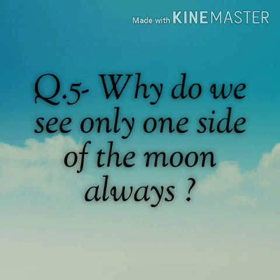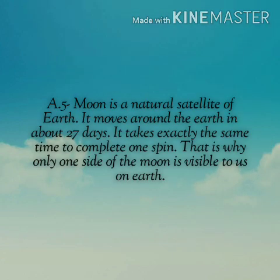Question number 5: Why do we see only one side of the moon always? The moon is a natural satellite of Earth. It moves around the Earth in about 27 days, and it takes exactly the same time to complete one spin. That is why only one side of the moon is visible to us on Earth.